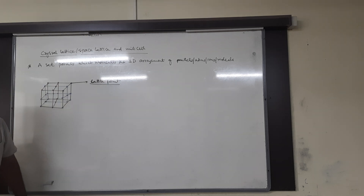Crystal lattice is a 3D arrangement of particles — how particles are arranged in 3D space. In crystal lattice, each point indicates a lattice point, which may be an atom, ion, or molecule. When all lattice points are joined in a straight line, it gives the geometry of the crystal. For example, joining all lattice points here gives a cube.